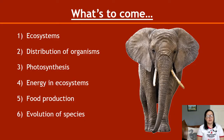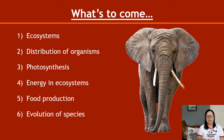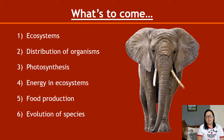This unit is starting with ecosystems. The second key area is distribution of organisms — how organisms manage to be in certain areas and how we sample them. Key Area 3 is photosynthesis, so we'll be looking at that process in more detail — time to remember about the chloroplast of plant cells when we get to that. Energy and ecosystems is a nice short one, followed by food production, which is massive, about fertilisers and pesticides. And then evolution of species to finish off the whole course.